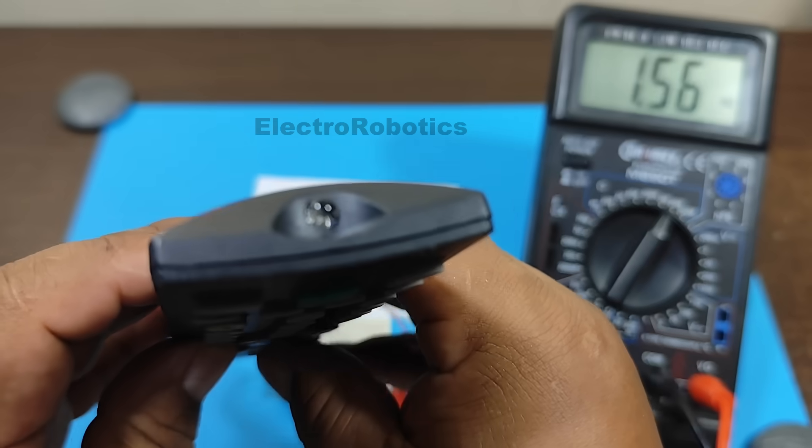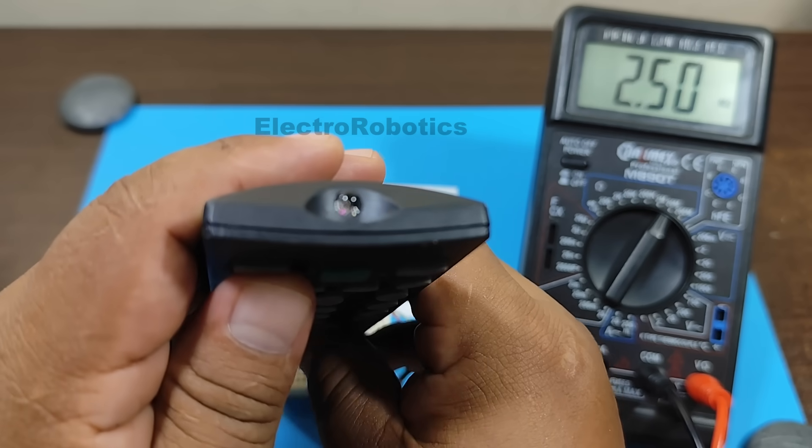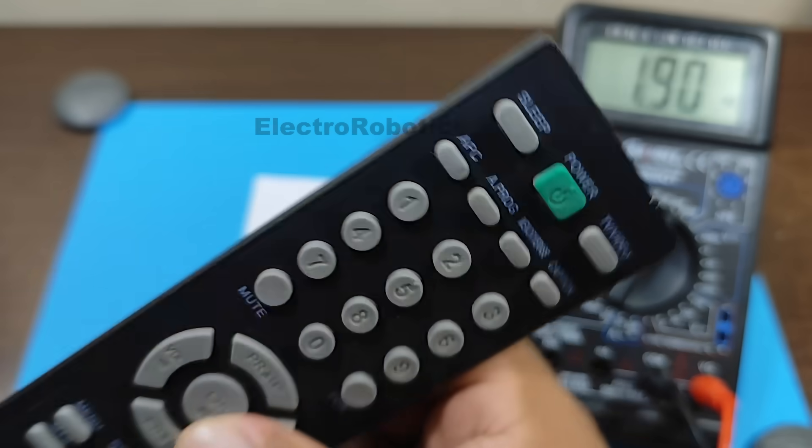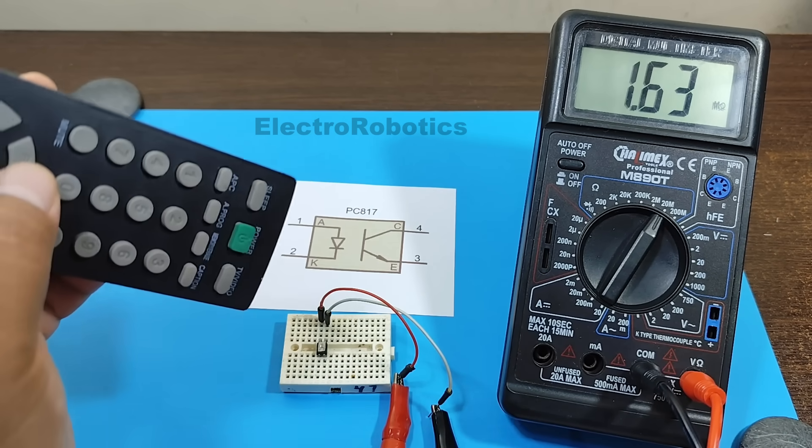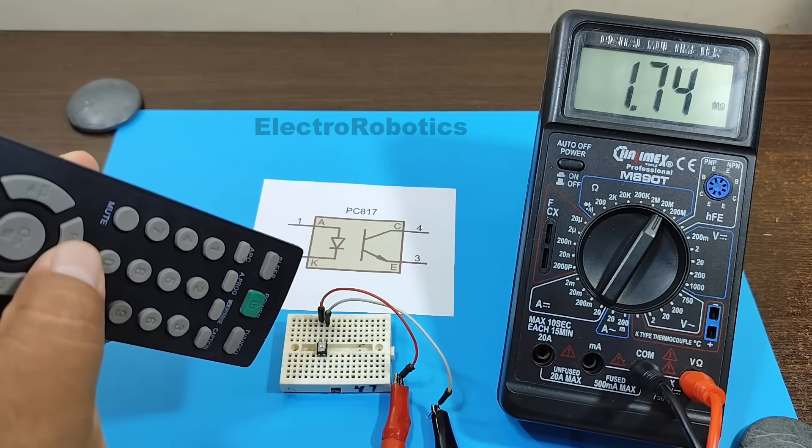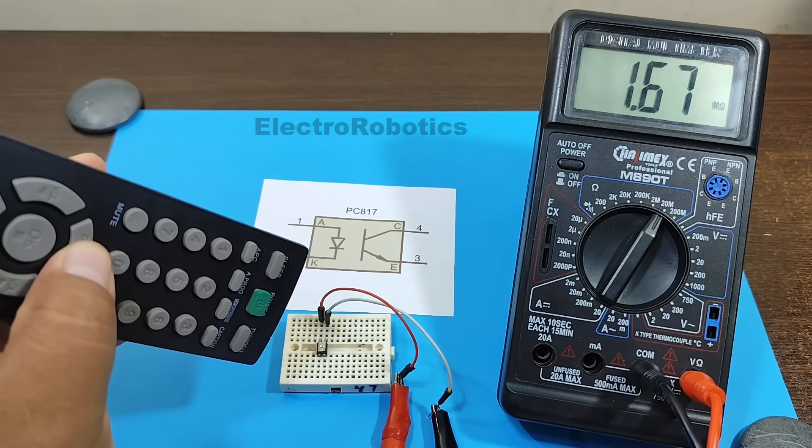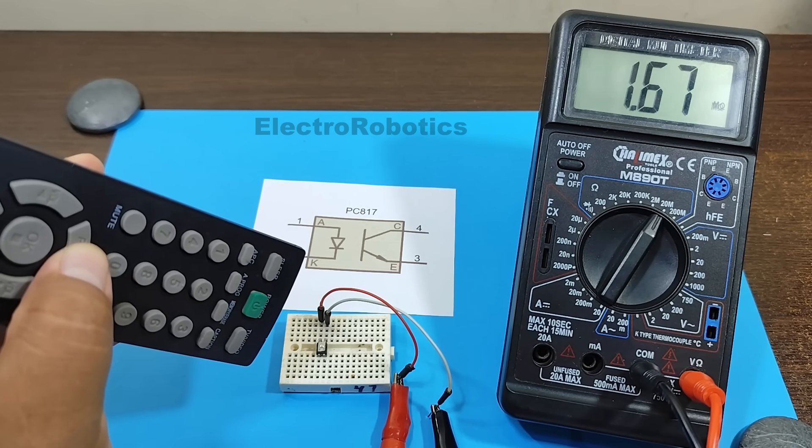However, we can also use the infrared light from a remote control. Let's see how much the resistance drops with the light from this remote control. As you can see, it drops quite a bit.